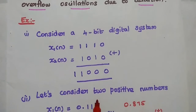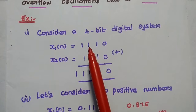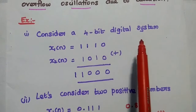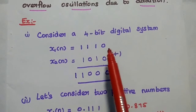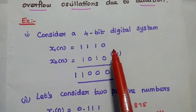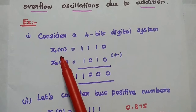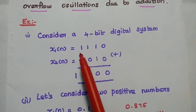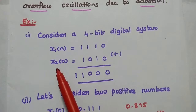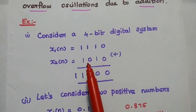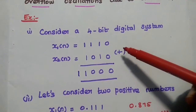Here we can consider an example. The first example uses a 4-bit digital system, meaning the registers used in the system have a size of 4 bits. The first number is x1(n) = 1110. The second number is x2(n) = 1010.